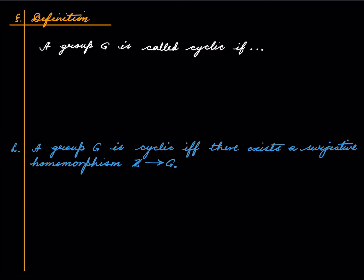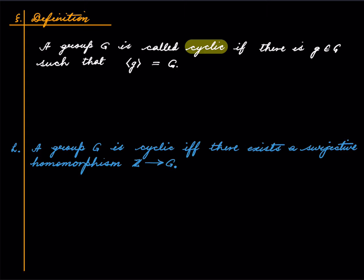Today we will not have any problems. A group G is called cyclic if there is an element g in the group such that the subgroup generated by it equals the whole group. If it has a single generator, we say it is a cyclic group.